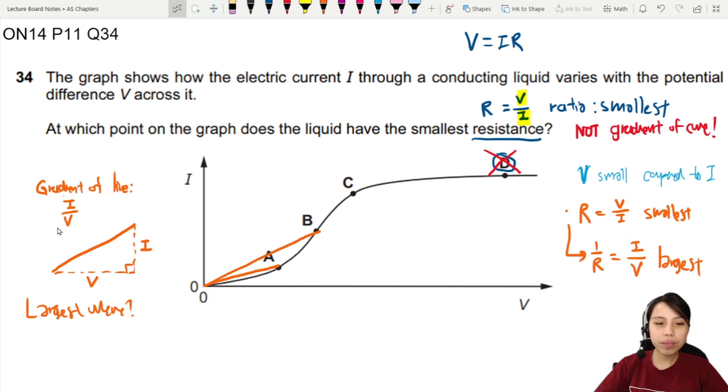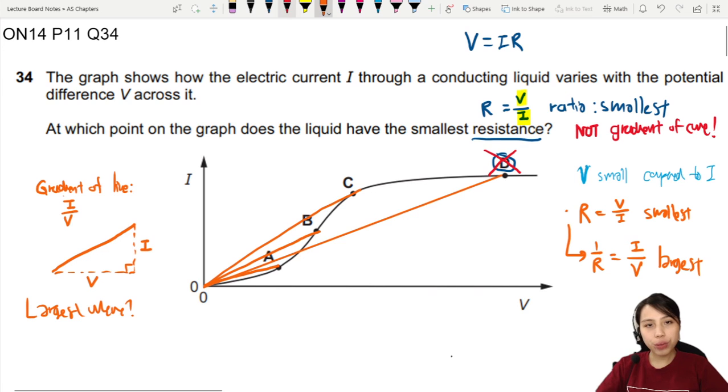So we're going to draw also for B and also for C. And lastly, D. Okay, so from this, we can very clearly see which one has the largest gradient, which line has the largest gradient. And that will be C. So this one largest. Hence, we choose C.